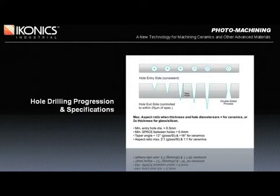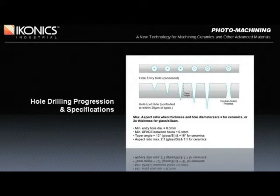There's an aspect ratio limitation of 2 to 1 for glass and 1 to 1 for ceramics. In glass, the taper angle ends up about 12 degrees. In the harder ceramic materials, such as silicon carbide, the taper angle will end up about 16 degrees. It's a function of how easily, or not, the material is removed by the process. An important note here is that the exit hole opening can be precisely controlled in order to obtain a specified exit hole diameter.